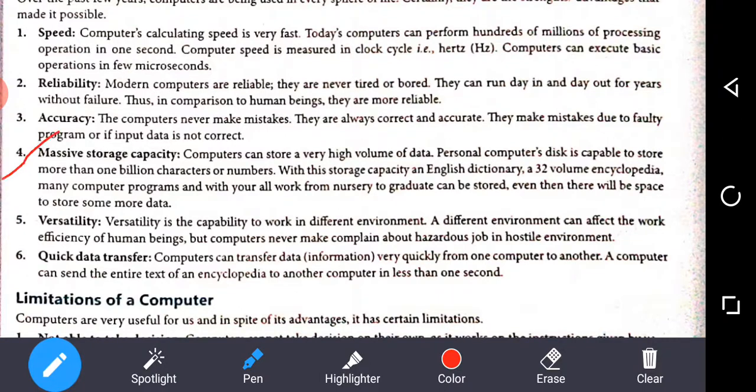Next is massive storage capacity. Computers can store very high volume of data. Personal computer disk is capable to store more than 1 billion characters or numbers. With this storage capacity, an English dictionary, a 32 volume encyclopedia, many computer programs, and all your work from nursery to graduate can be stored. Even then, there will be space to store some more data.